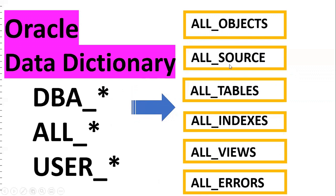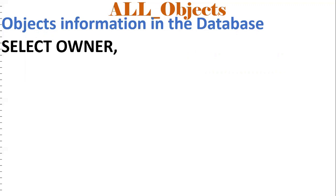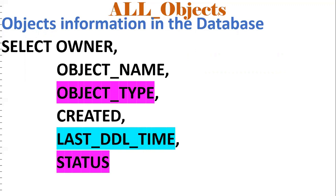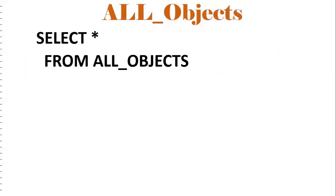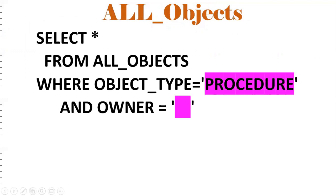As a database developer you should know all these things. Let us discuss one by one. First is ALL_OBJECTS — it gives information about objects. Whenever we create any object in a particular database, an entry is made in this table. It has columns like owner, object name, object type, created date, last modified date, and status — whether it is valid or invalid. Syntax: SELECT * FROM ALL_OBJECTS WHERE OBJECT_TYPE = 'PROCEDURE' AND OWNER = '...' — this will give a list of procedures for a particular owner.